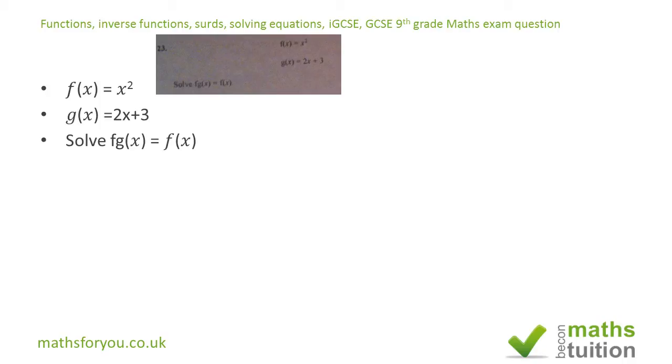What we need to do is put the value of g(x) and replace x with 2x plus 3 and then square it. So we end up with (2x + 3)² because that's what this is here.